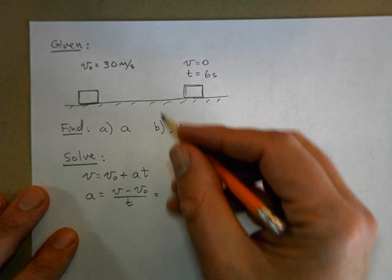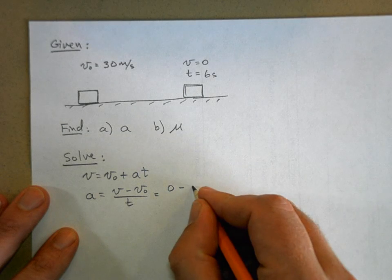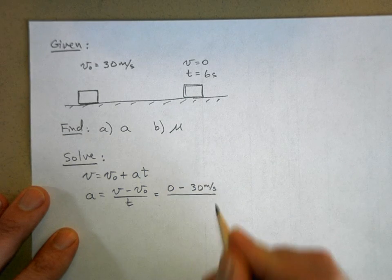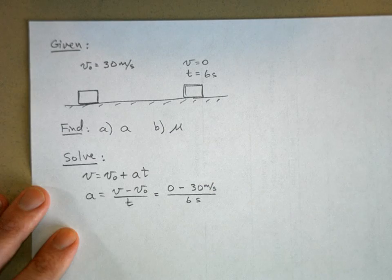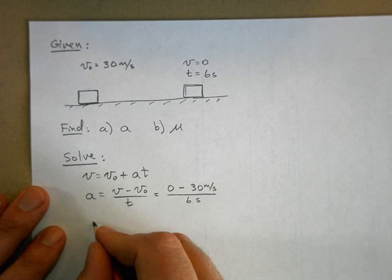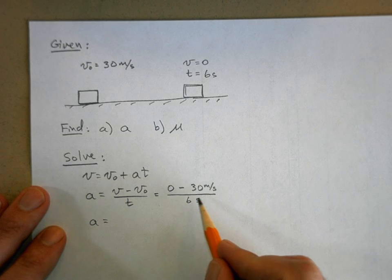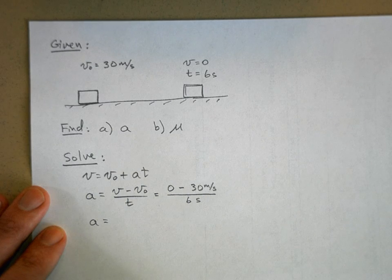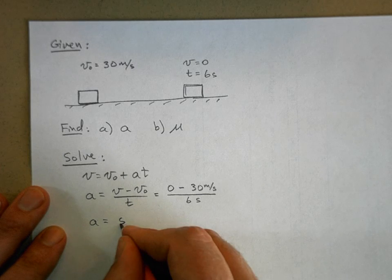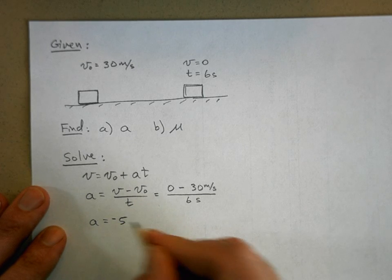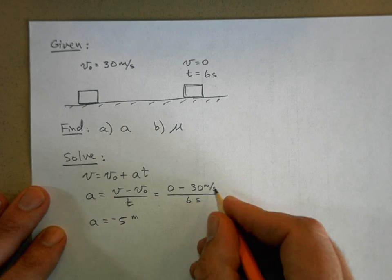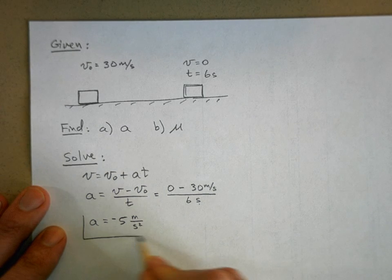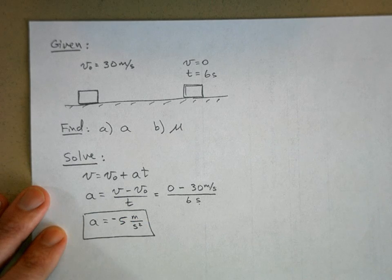Now we can plug in our numbers. The values given: the final velocity is zero minus 30 meters per second divided by time, 6 seconds. So the acceleration is, well, this is negative 30 divided by 6 is 5, right? 30 divided by 6 is 5, but it is negative and it has units of meters per second every second, or meters per second squared. And that's my answer for part a.